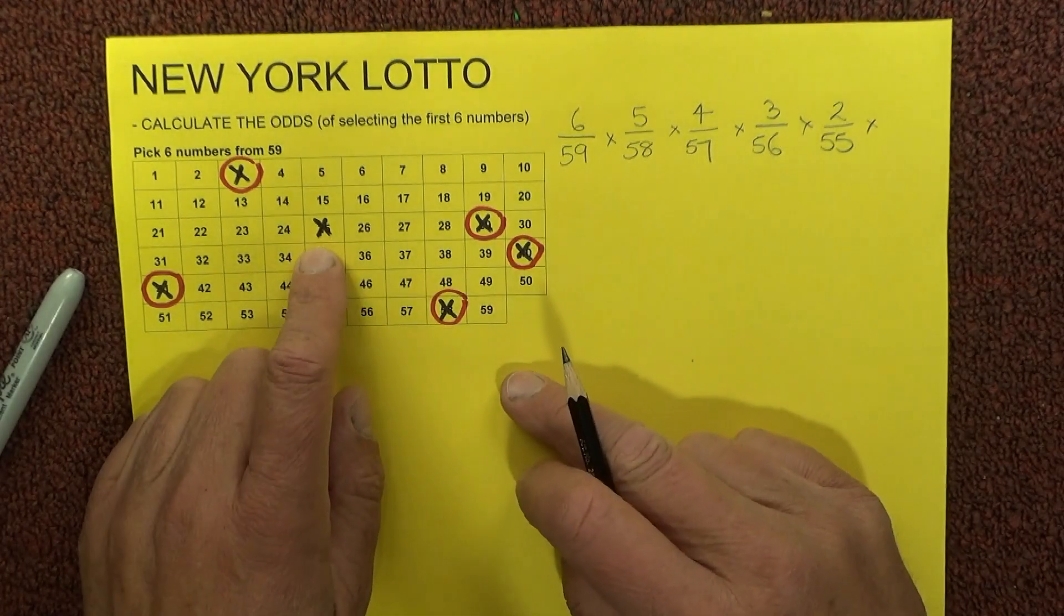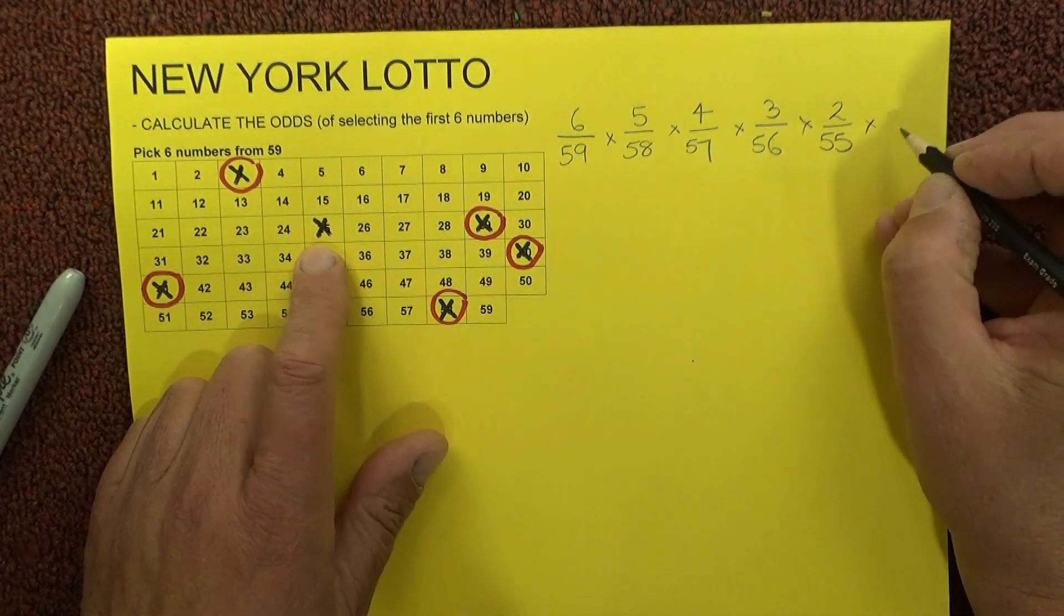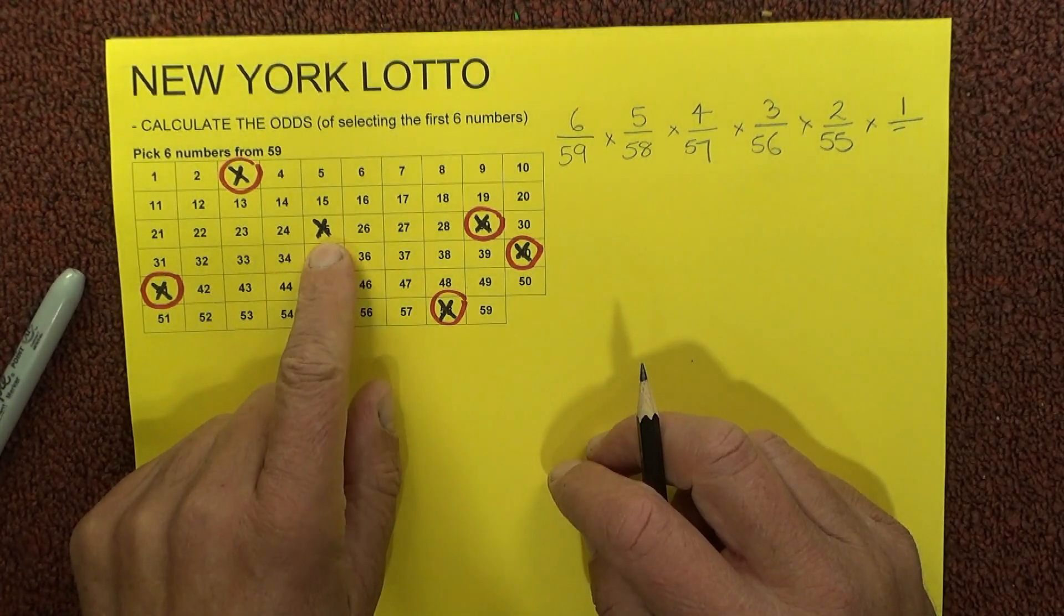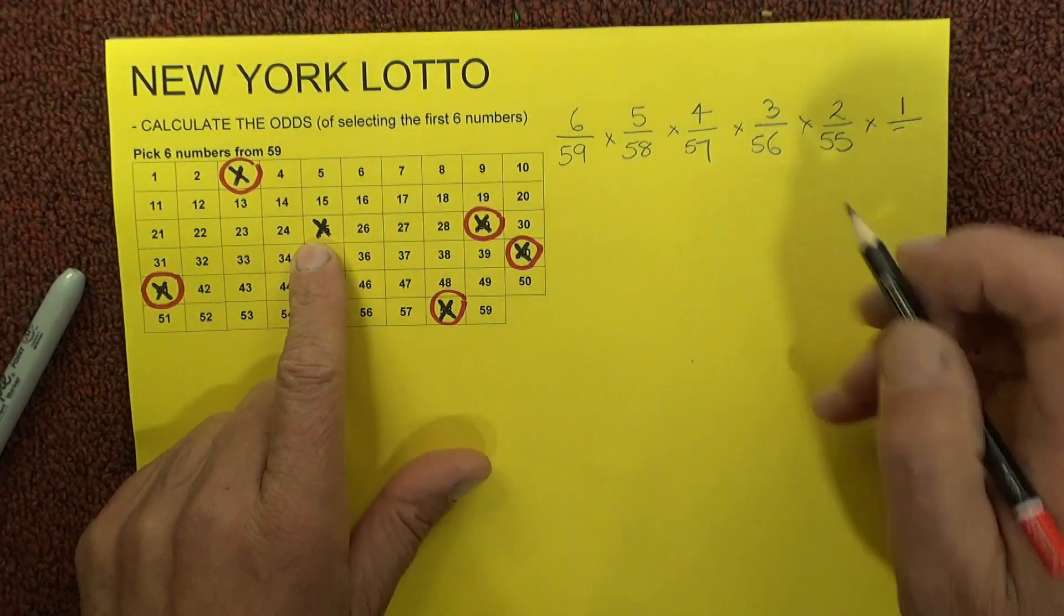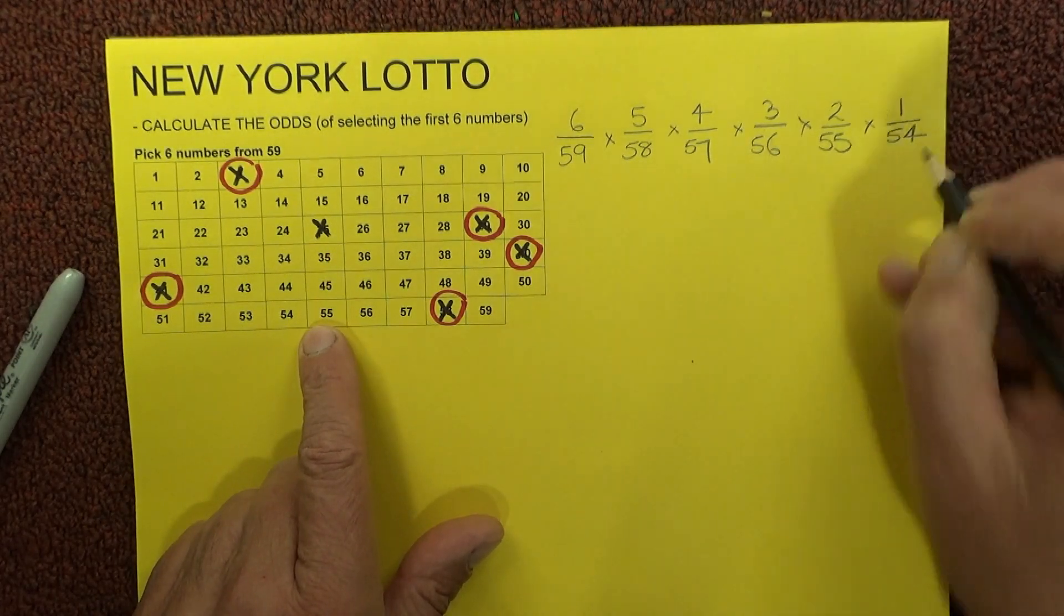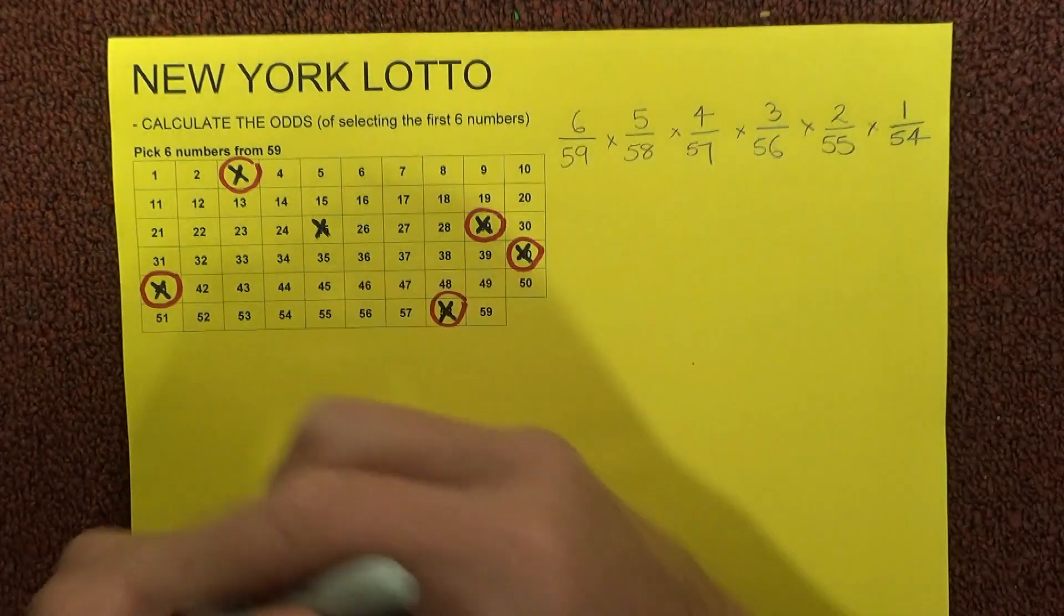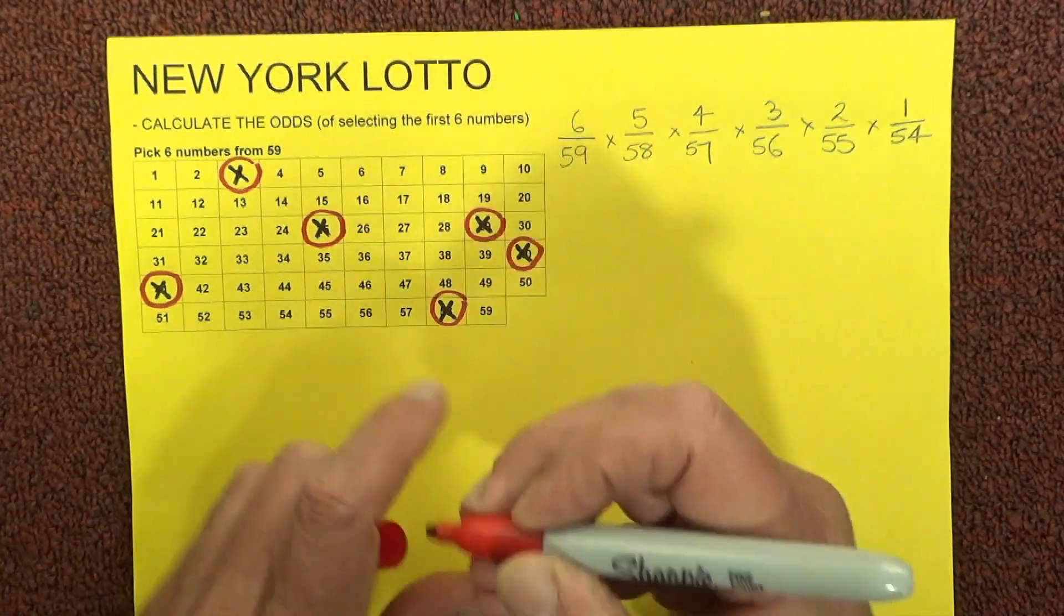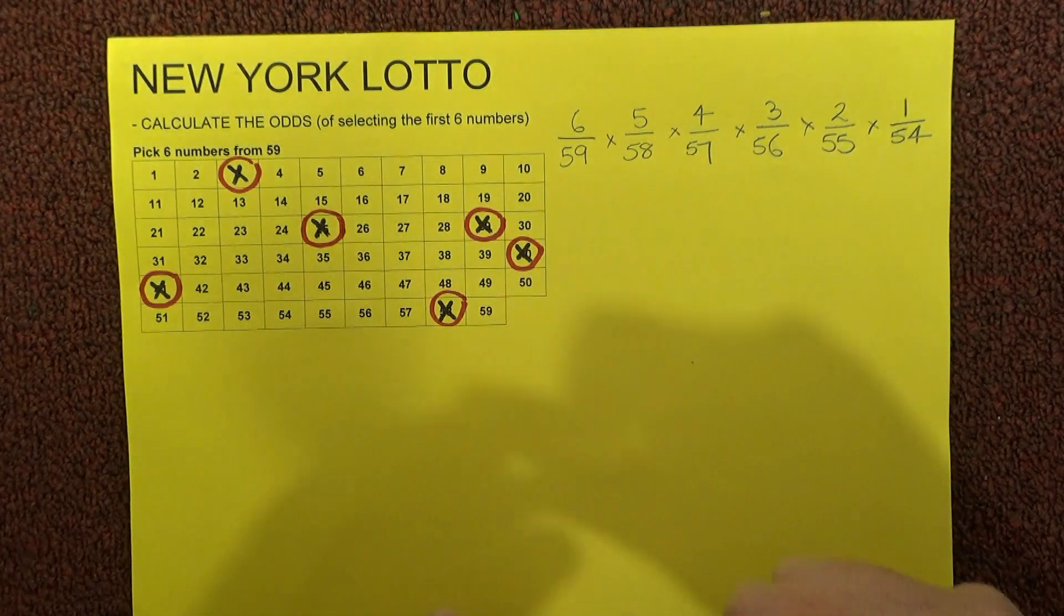Now when the last number is drawn, there's only one unmatched number left on your coupon, and there's 54 balls left in the barrel. So you have one chance in 54 of matching the final number that's drawn. If you've matched that final number, I'm sure that you'll be very, very, very excited at this stage.